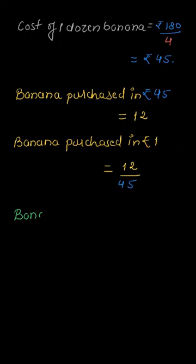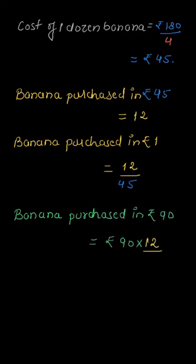₹90 you simply multiply 90 with 12÷45. So bananas purchased in ₹90 is 90×12÷45. 45 into 90 is 2, then 12×2 = 24. Therefore, 24 bananas can be purchased using ₹90. Thank you.